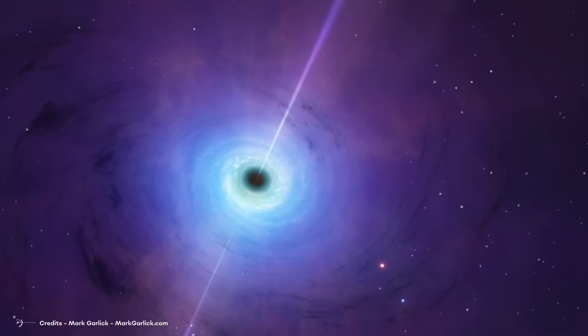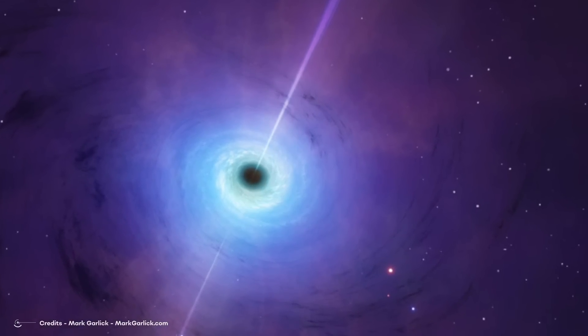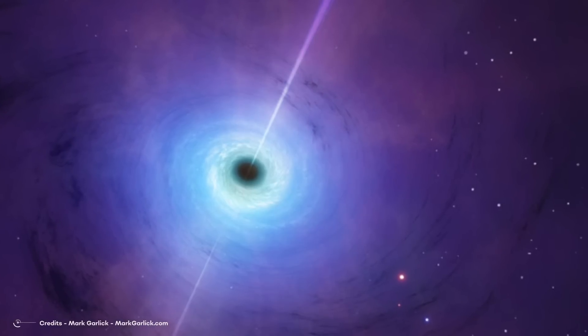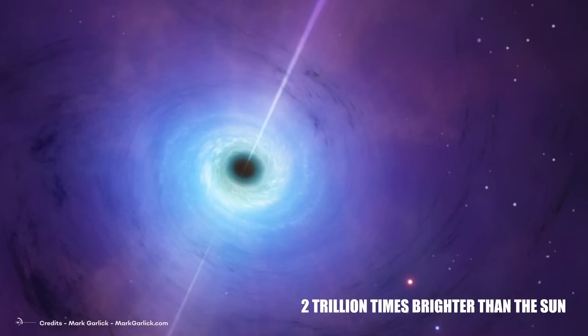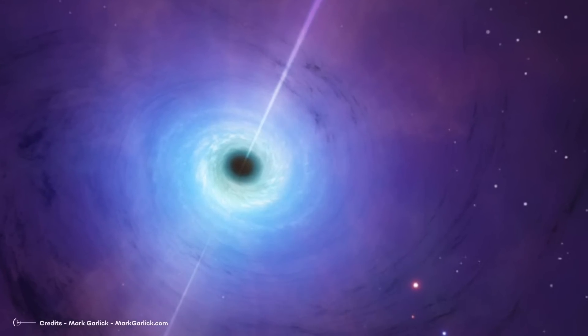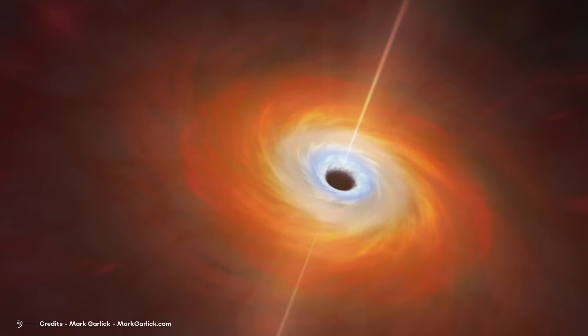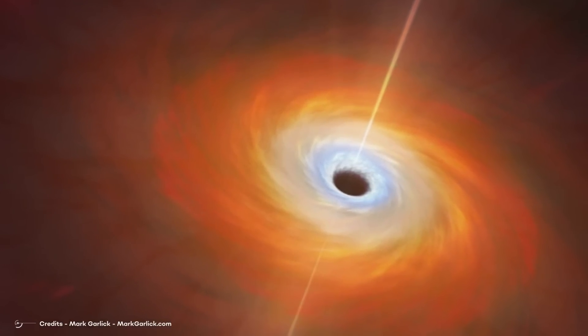The researchers believe that the explosion is far too bright to be a supernova, which usually lasts a couple of months before fading away. It is estimated to be about 2 trillion times brighter than the Sun, and it has left astronomers baffled as they have never seen anything like this before. Although AT2021 LWX is comparable to a quasar, which occurs when supermassive black holes swallow gas, there are significant differences. Quasars tend to flicker in brightness, while AT2021 LWX suddenly started flowering up from nothing, and it is still blazing away.